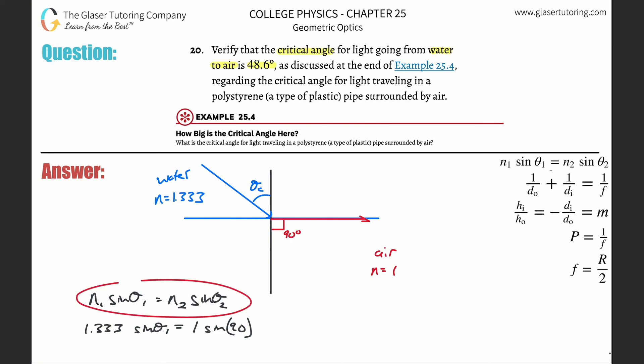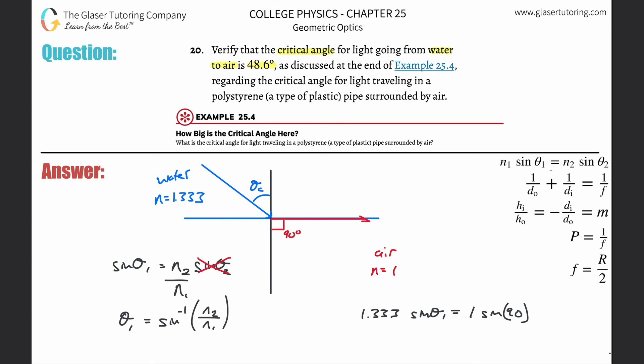So watch what's going to happen to this formula. The sine of 90 is 1, so that just cancels. So now if I had to solve this for theta 1, which is known as the critical angle, you would have divided out the index of refraction of the incident ray, and then you would have had to have taken the inverse sine of both sides.